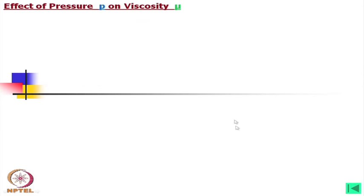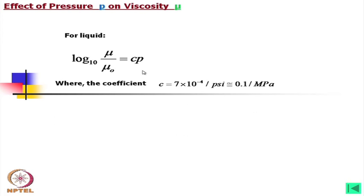The effect of pressure p on dynamic viscosity μ is given by: log₁₀(μ/μ₀) = cp, where the coefficient c equals 7×10⁻⁴ per psi, which is almost equal to 0.1 per megapascal. Here μ₀ is the reference viscosity at normal temperature and pressure.